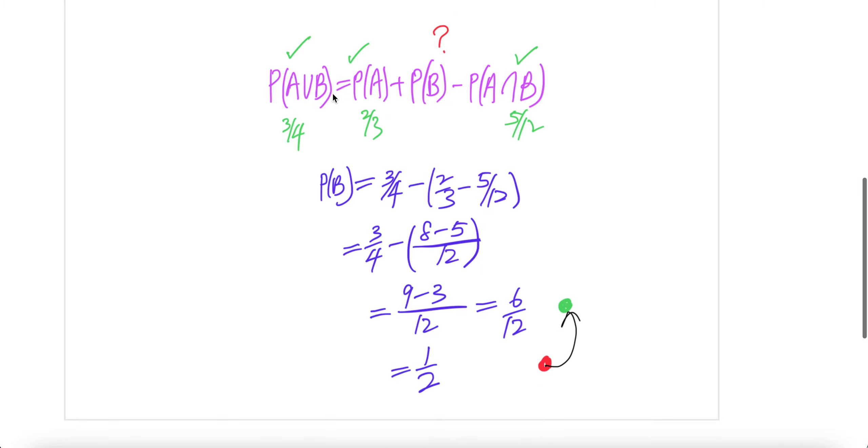Now, P(A union B) is equal to P(A) plus P(B) minus P(A intersect B). This is known.